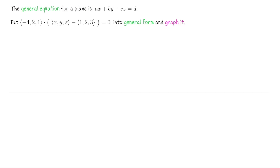However, we do have another way to write down the equation for the plane, which is called the general equation for a plane. Sometimes students like this because it looks more like an equation — it takes out the action of a dot product. It also removes some ambiguity. Let's go ahead and see how to convert this vector equation for a plane into the general form, and then I'll also graph this plane. Then we'll revisit the general equation for the plane.